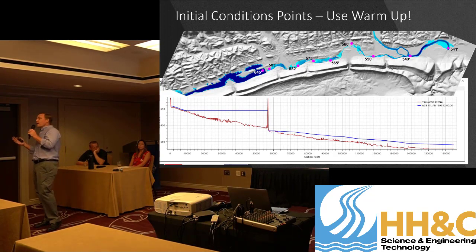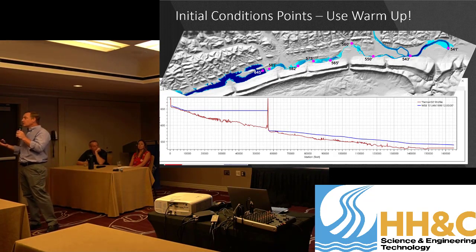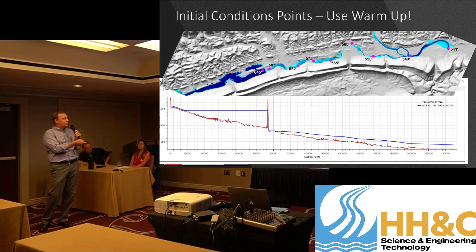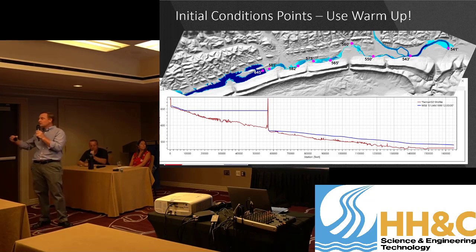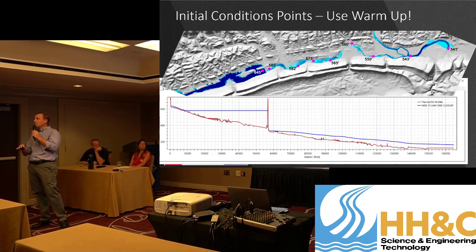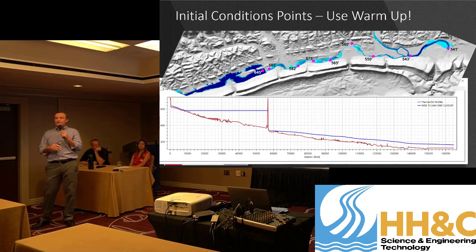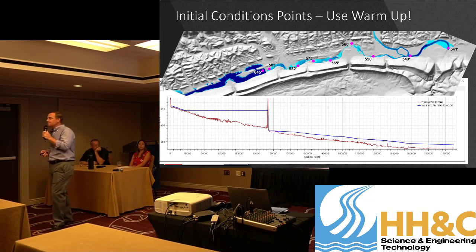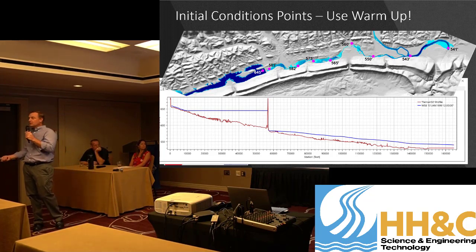If you're stuck using version 6.1 because that's what the client wants but you still want to use this feature — you can still use the reference points, it's just not going to solve for as good a water surface. What you can do is use the warm-up time steps available in RAS to take your initial profile that might look very blocky and stair-stepped, and if you run the initial warm-up period for just a little bit you'll get a nice smooth water surface. That's a workaround if you're not able to get into version 6.3.